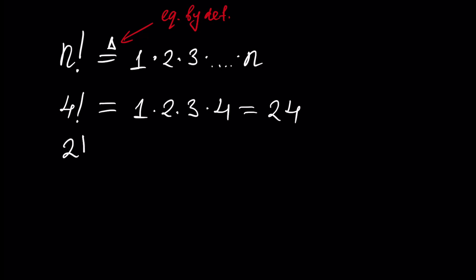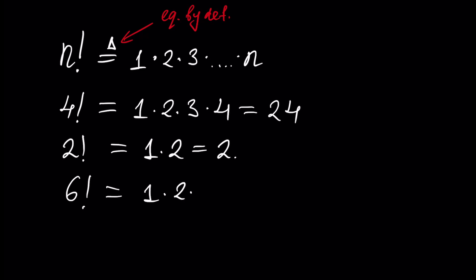2 factorial is 1 × 2, which is just 2. 6 factorial is 1 × 2 × 3 × 4 × 5 × 6, and if we perform the multiplication it will be equal to 720.